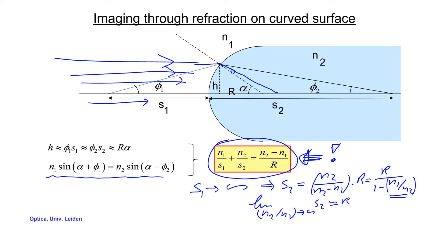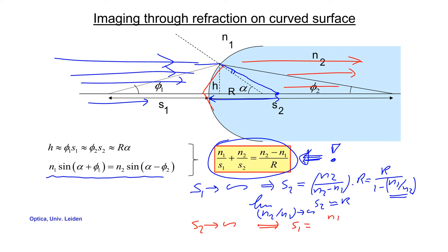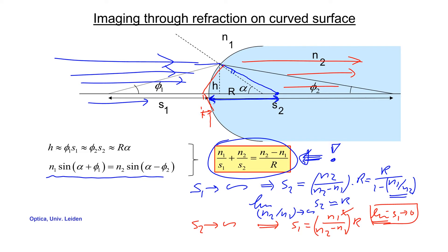In the second limit, s2 → ∞ — parallel rays exit and you start from a focus on the other side — a similar expression is found but with n1 in the numerator. Taking the same extreme limit, s1 → 0. The focus on the air side is different from the focus on the glass side, essentially because of Snell's law.